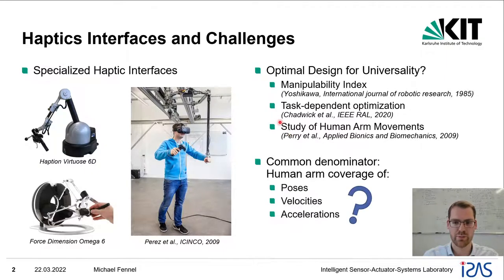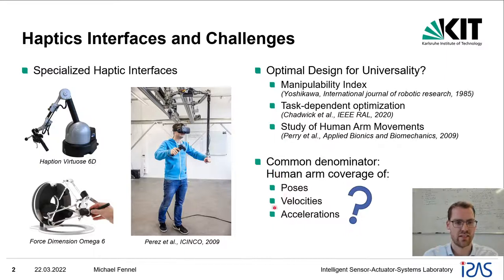However, we found that they were missing a lowest common denominator, which is the human arm itself, including its achievable poses, velocities, and accelerations.